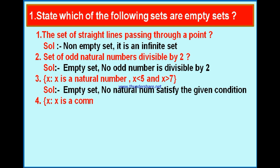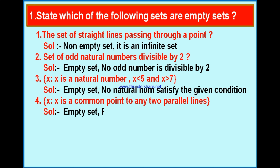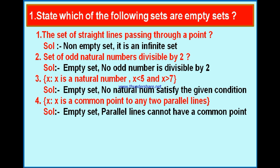Bit 4: x is a common point to any two parallel lines. Two lines are said to be parallel if they have no common point — no intersection point. Since parallel lines have no common point at all, this set is an empty set.